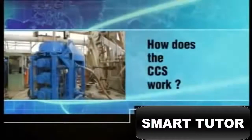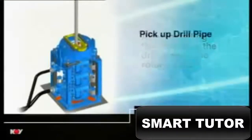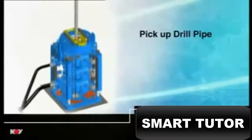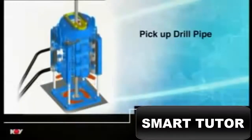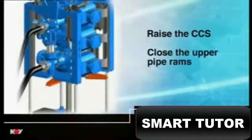How does the CCS work? After installing the CCS over the drill pipe in the rotary table, the first step in making a connection is to pick up the drill string to position the tall joint at approximately the correct height above the rotary table. The next step is to raise the unit on its jacks, and close the upper pipe rams above the tall joint.